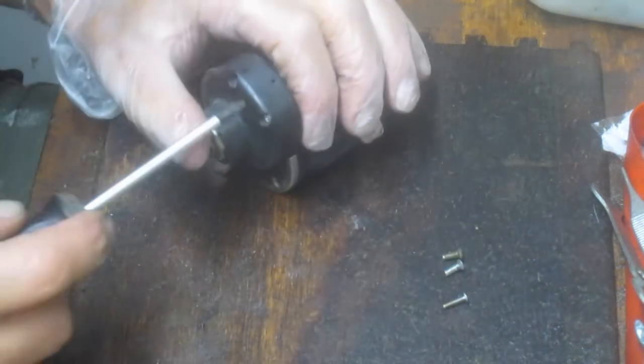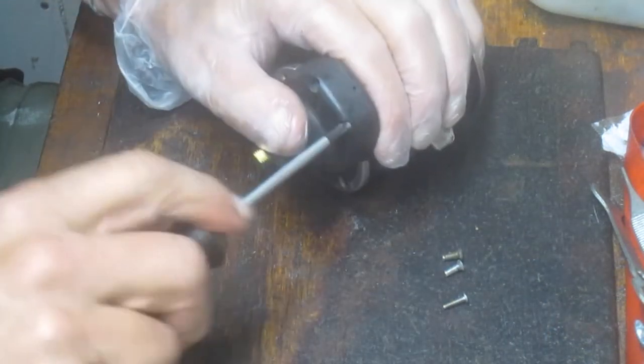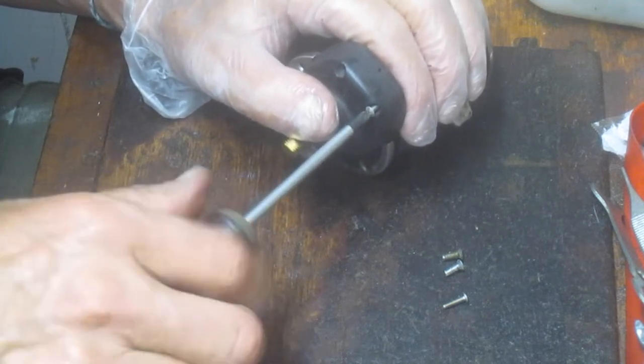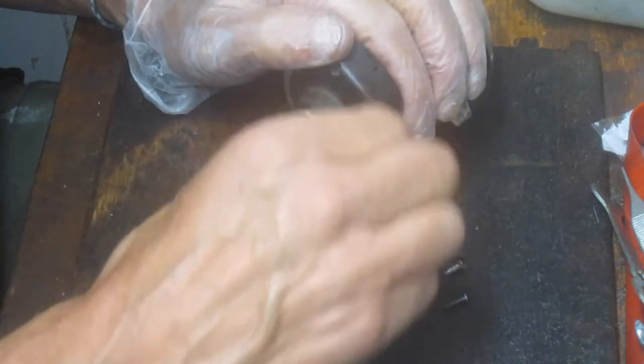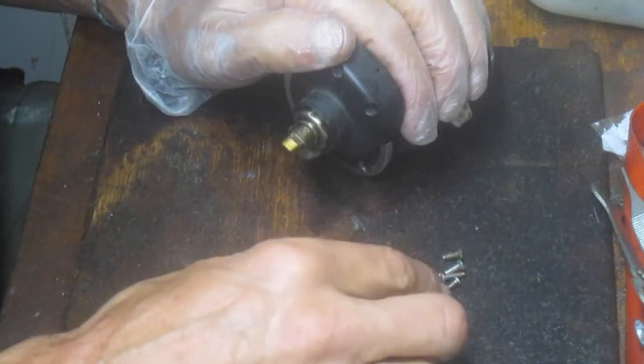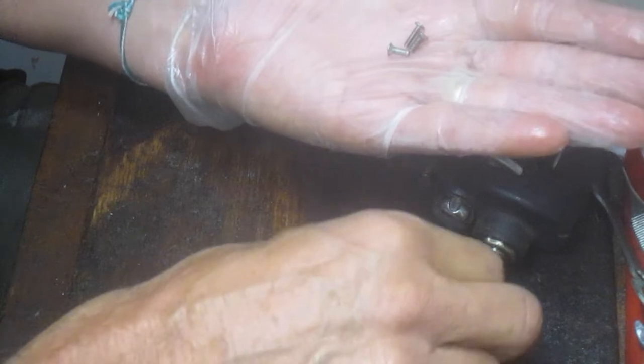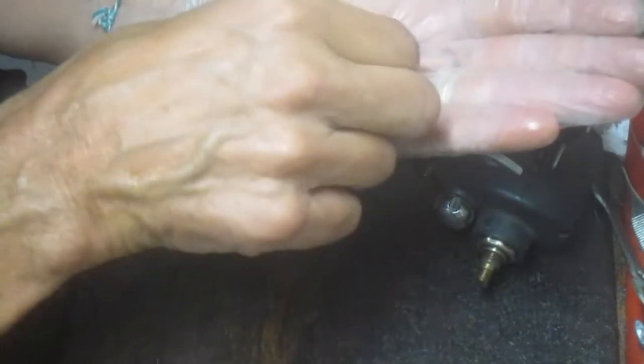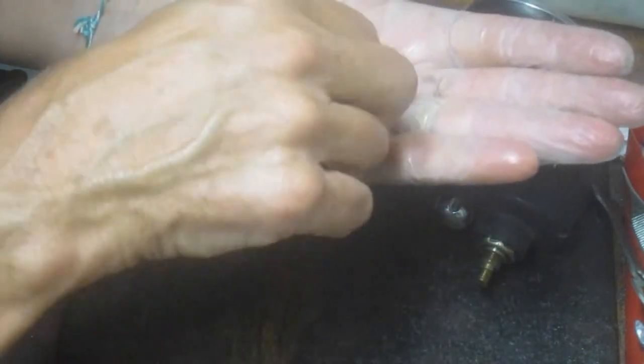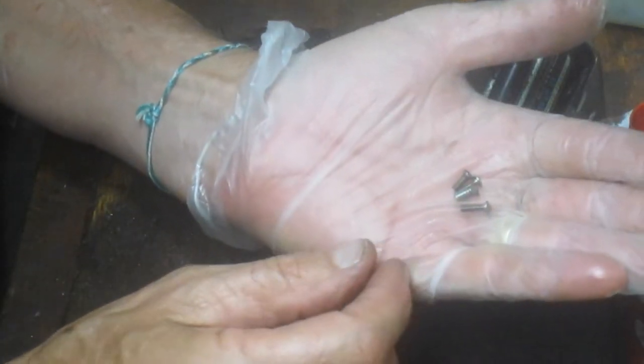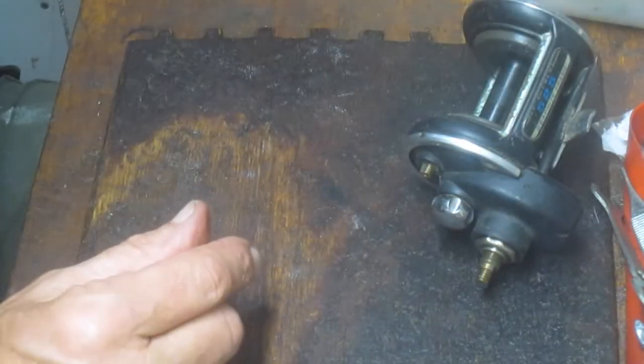So, what I'm doing now is I'm actually laying those screws on my table just to make sure that they're all the same and they're not all the same. I just noticed that the ones that come out of the bottom here are narrower and longer than the two that came out of the trim ring. So, you want to remember that when you go ahead and put the reel back together.